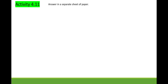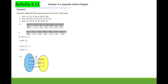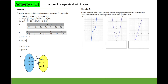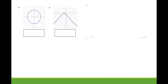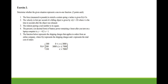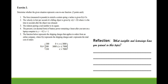For your activity, answer in a separate sheet of paper. Identify whether each item is one-to-one or not from the given set of ordered pairs, table, mapping diagram, or graph. Just simply write one-to-one or not. Also, identify the following real-life situations — whether each is a function and whether it is one-to-one or not.